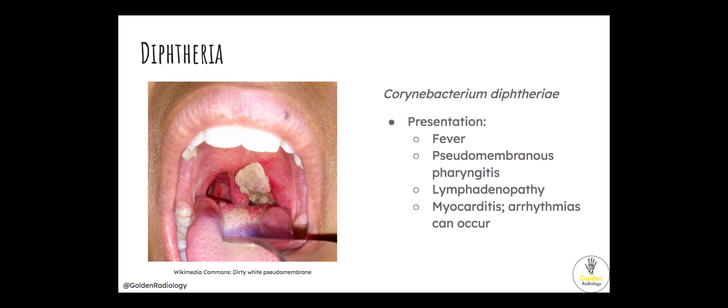Diphtheria is caused by Corynebacterium diphtheriae. The presentation is fever and, very classically, pseudomembranous pharyngitis — dirty white pseudomembranes in the posterior pharynx. Other issues that can arise are myocarditis and arrhythmias.